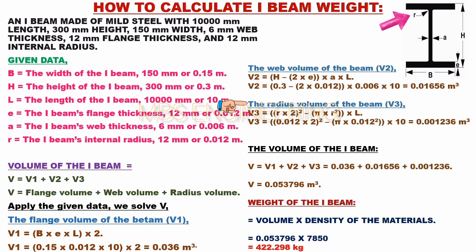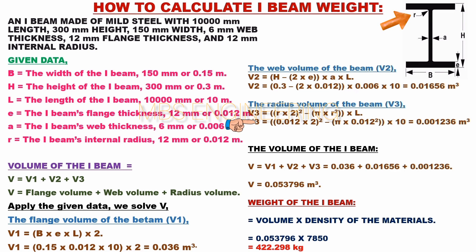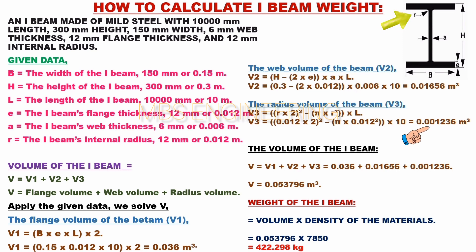We calculate the radius volume of the beam, V3. V3 = (R × 2) whole squared minus pi × R squared, multiplied by L = (0.012 × 2)² − π × 0.012² × 10 = 0.001236 cubic meters. The radius volume of the I-beam is 0.001236 cubic meters.